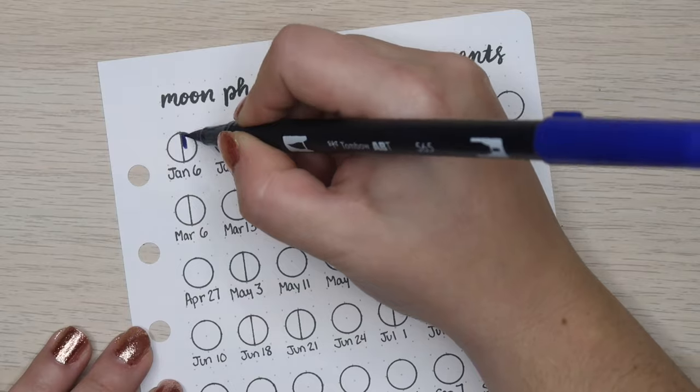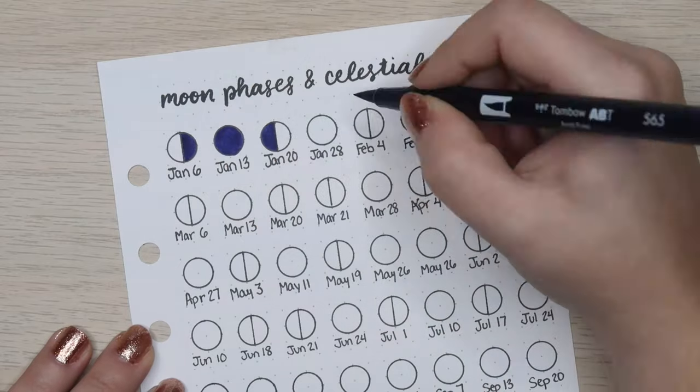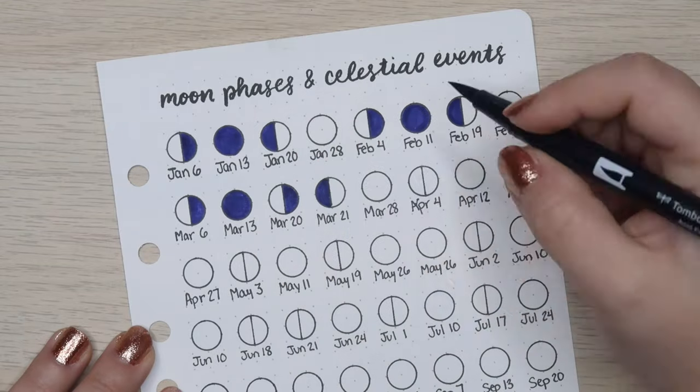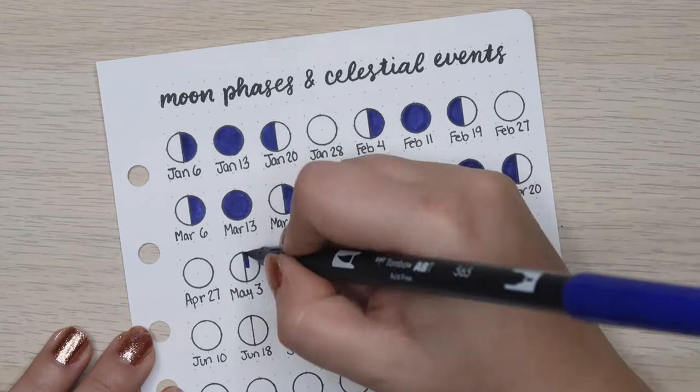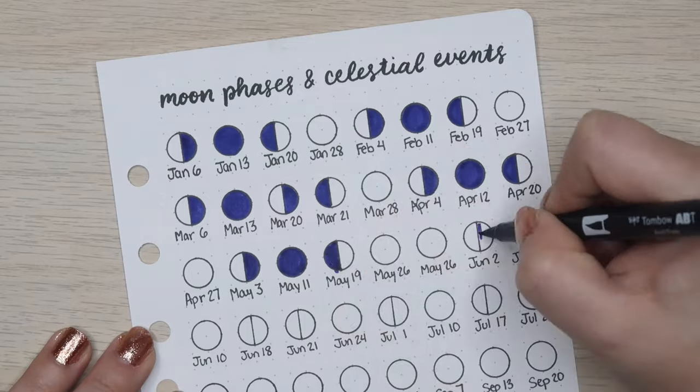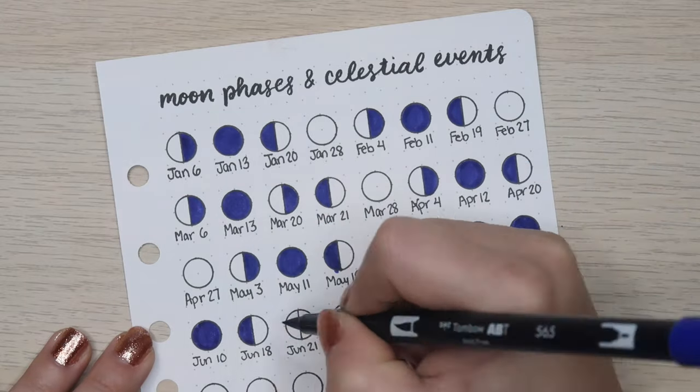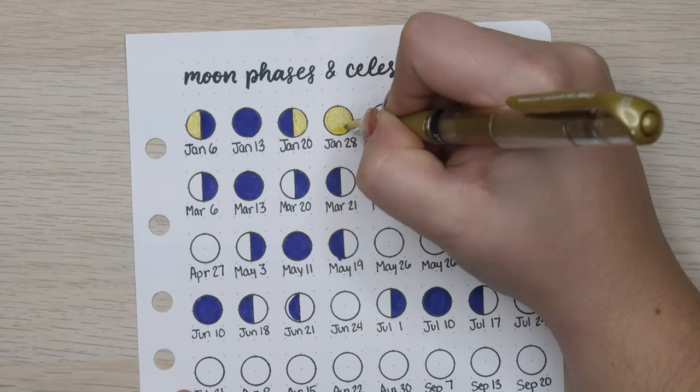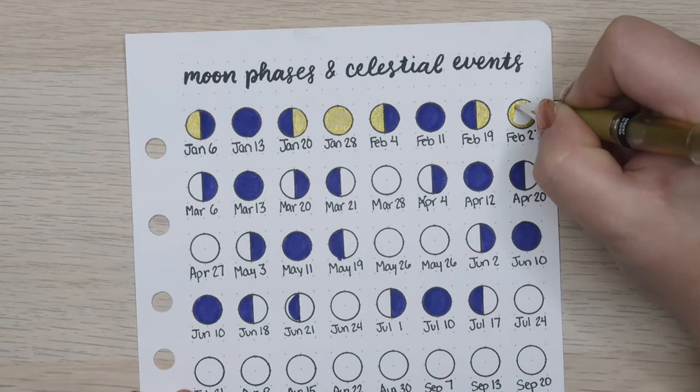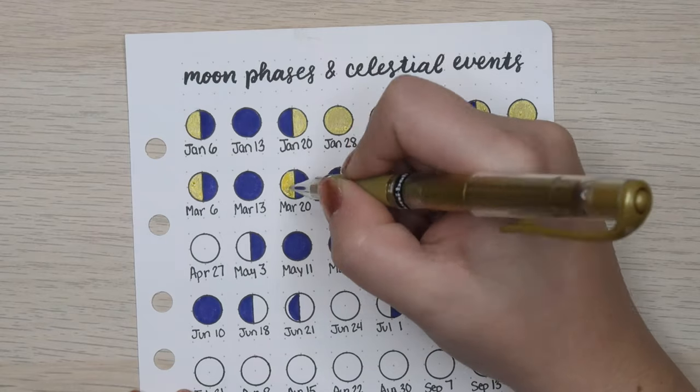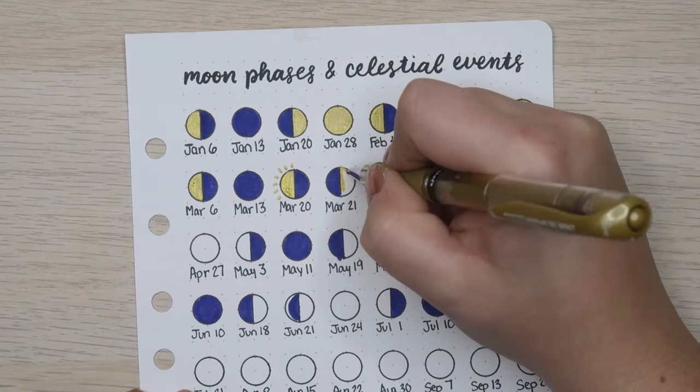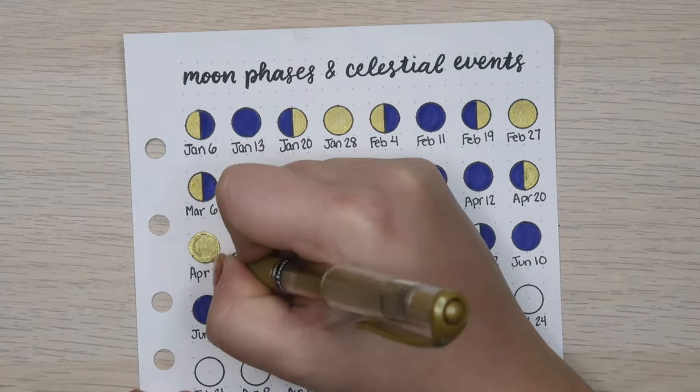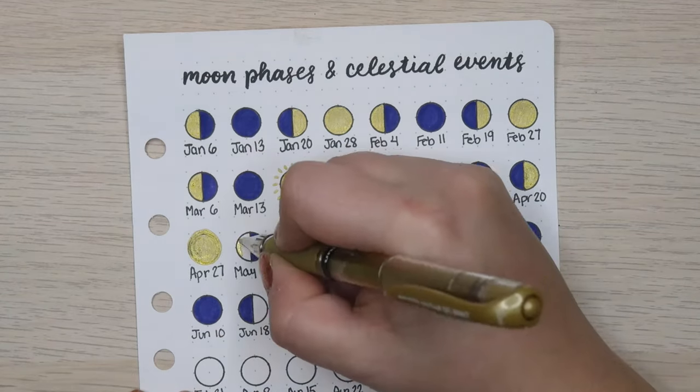The information is really easy to look up far in advance because the moon and all of these different events are very cyclical. So if you wanted to recreate this, you could come up with your own symbols for different celestial events. You could even include more celestial events that I didn't include. You can change up the color scheme.